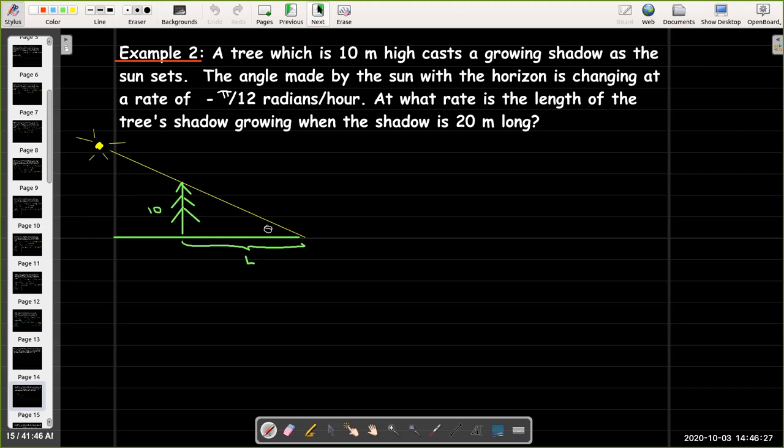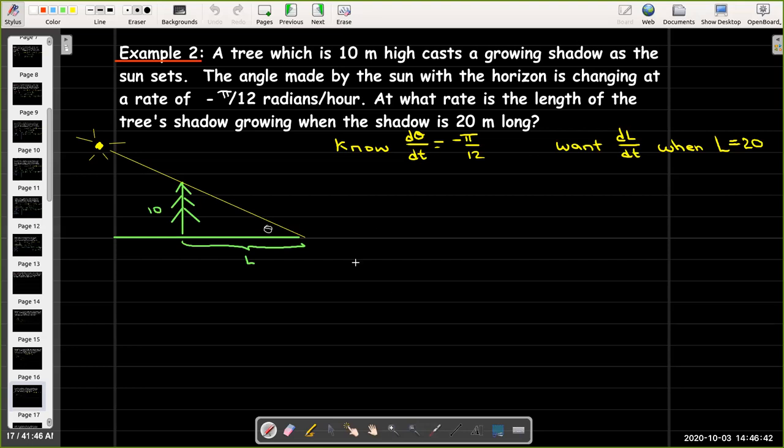Well, what do we know? We know that dθ/dt is negative π over 12. And we want dL/dt when L equals 20. So, what formula would connect these? Well, I know that tangent of theta is opposite over adjacent. So, I'll be using tangent of theta in this problem.